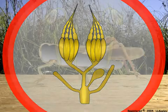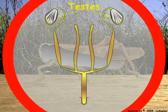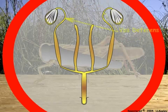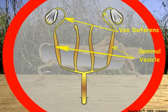In males, testes also consist of follicles where the sperm are matured as they progress from the tip to the base of the follicle. Mature sperm pass from the follicle to the vas deferens and into the seminal vesicle.